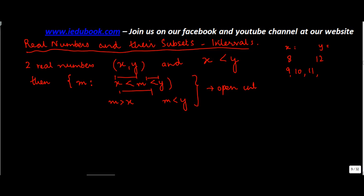And written down as (x, y). Please note the most important thing: this bracket represents that it is open, and this also represents that this is open. This means all the points between these two numbers, like 9, 10, 11, fall within this interval.